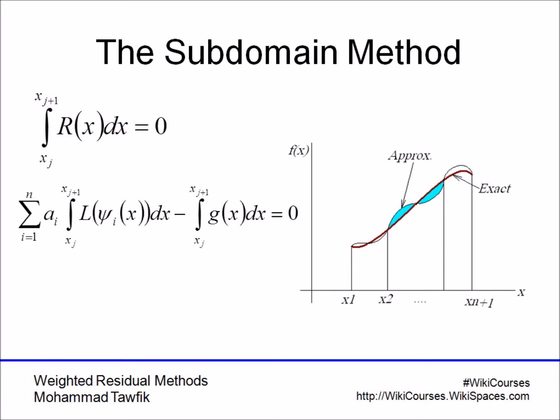So now let's write it down. It's basically integrating from any point on the domain to any other point on the domain. This is our subdomain. So for example here, if x1 is the boundary on one side, xn plus 1 is the boundary on the other side, we are integrating from x2 to x3.